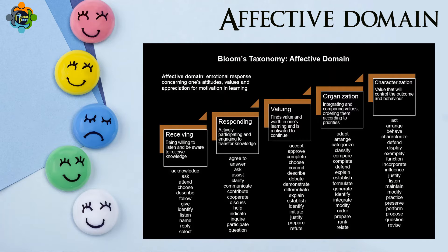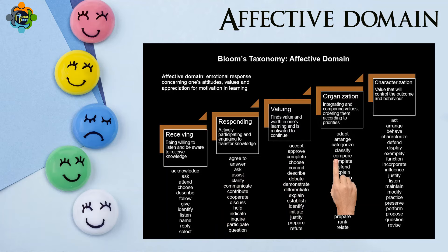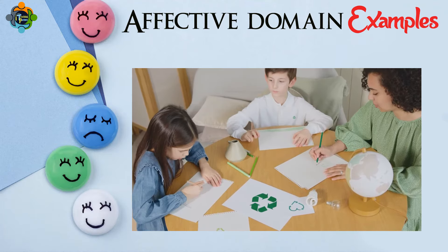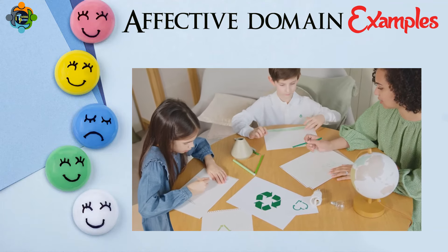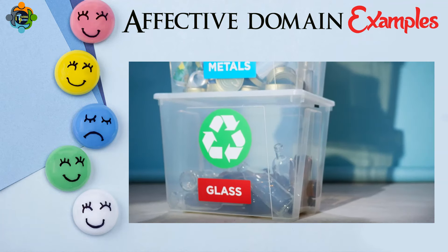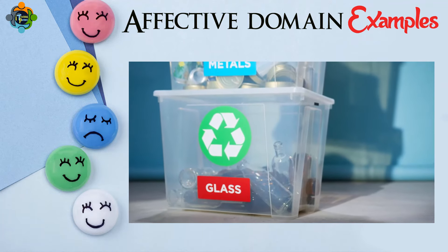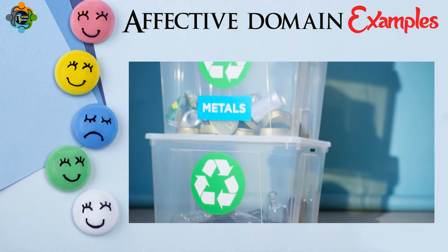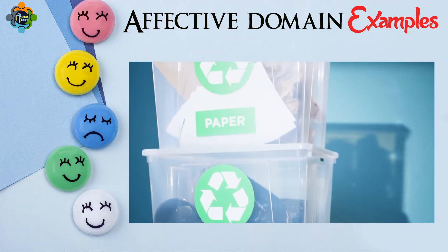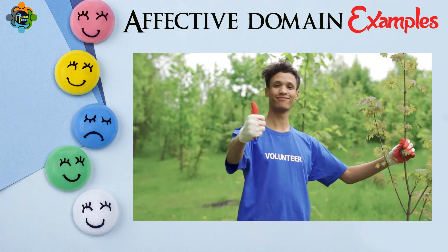Next up is the affective domain, which deals with emotions, attitudes, and feelings. This domain ranges from simple awareness and reception — receiving — to more complex levels like categorizing, where values are integrated into one's personality. For instance, in an environmental club, students at the receiving level might listen to issues about recycling; by the categorizing stage, they actively advocate and lead recycling initiatives, showing deep commitment to environmental values.